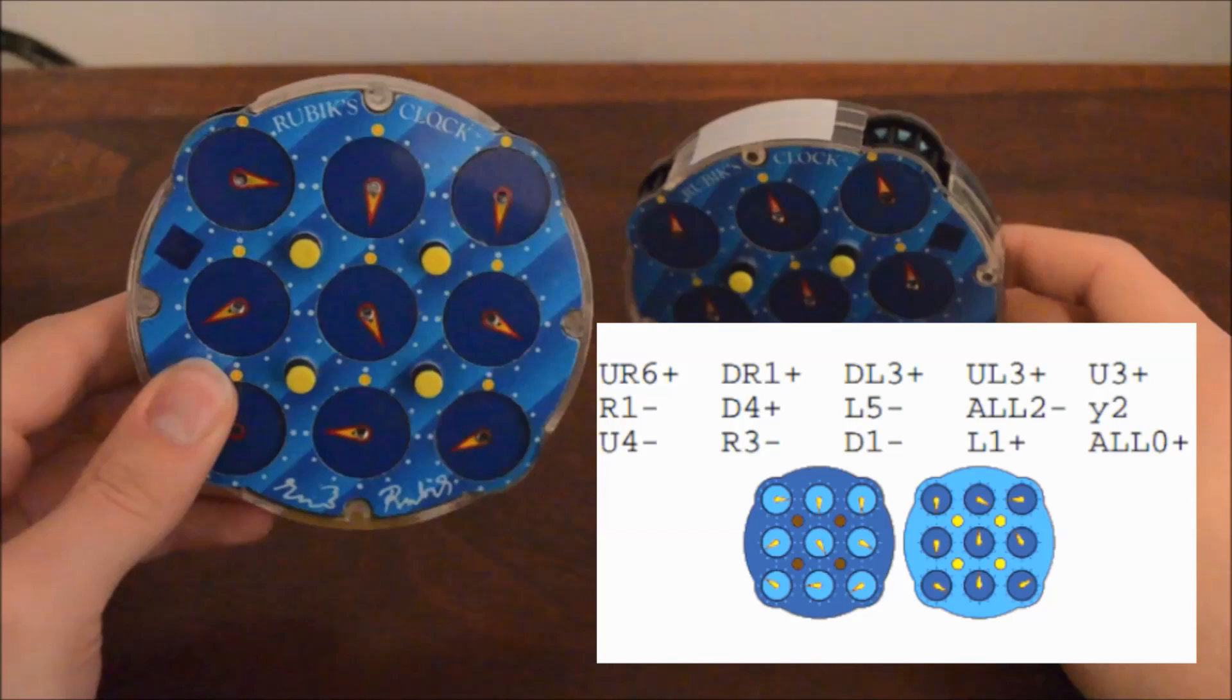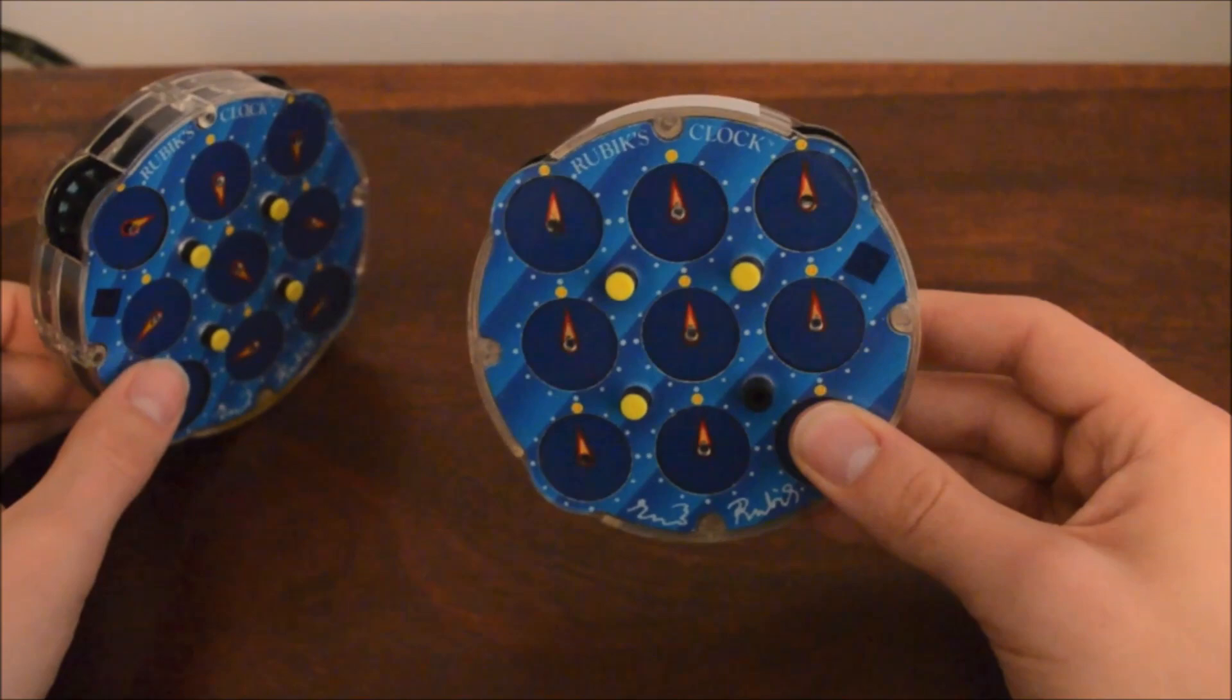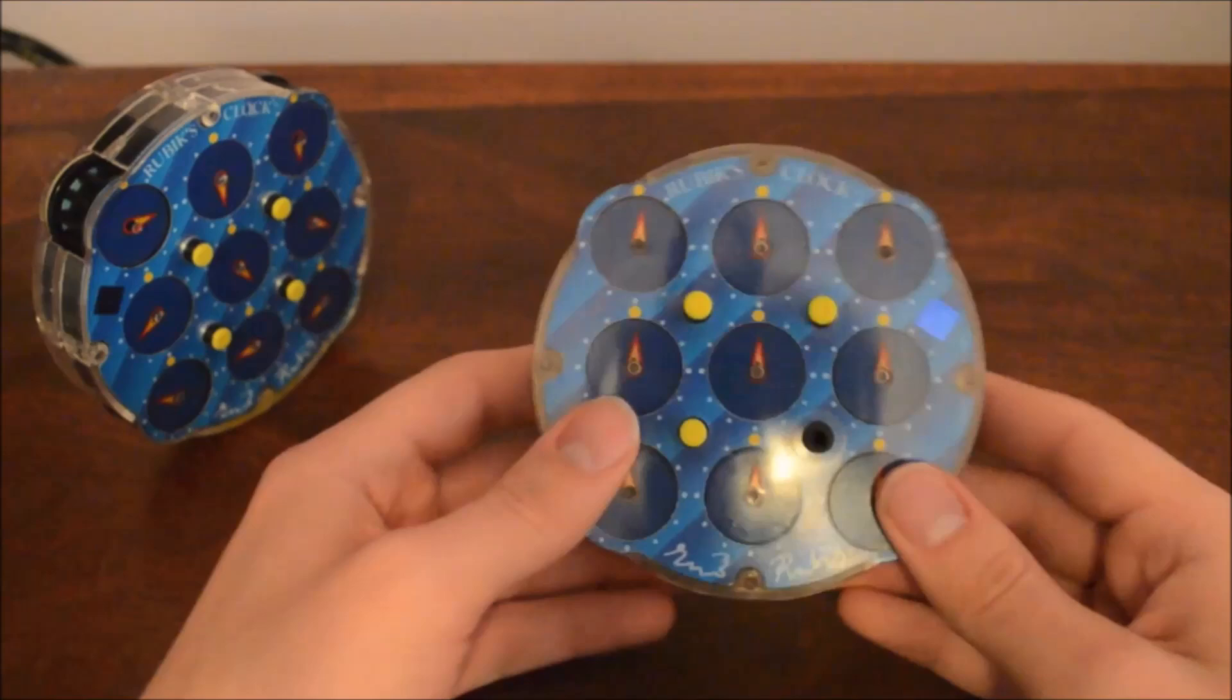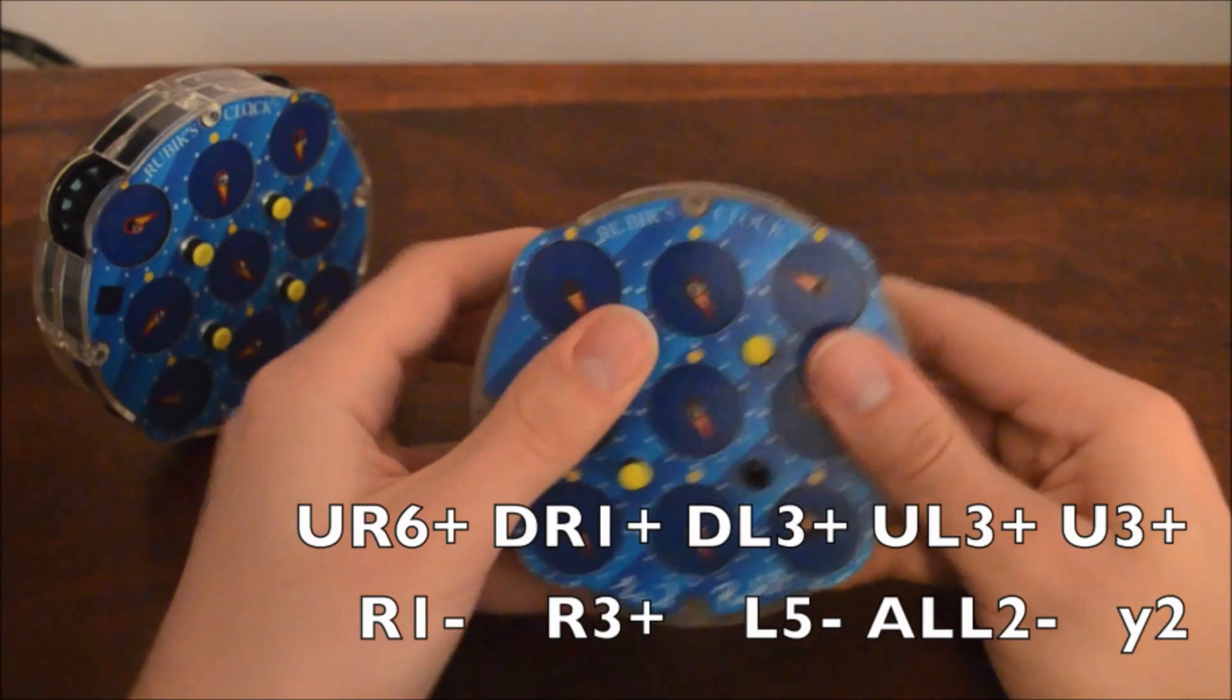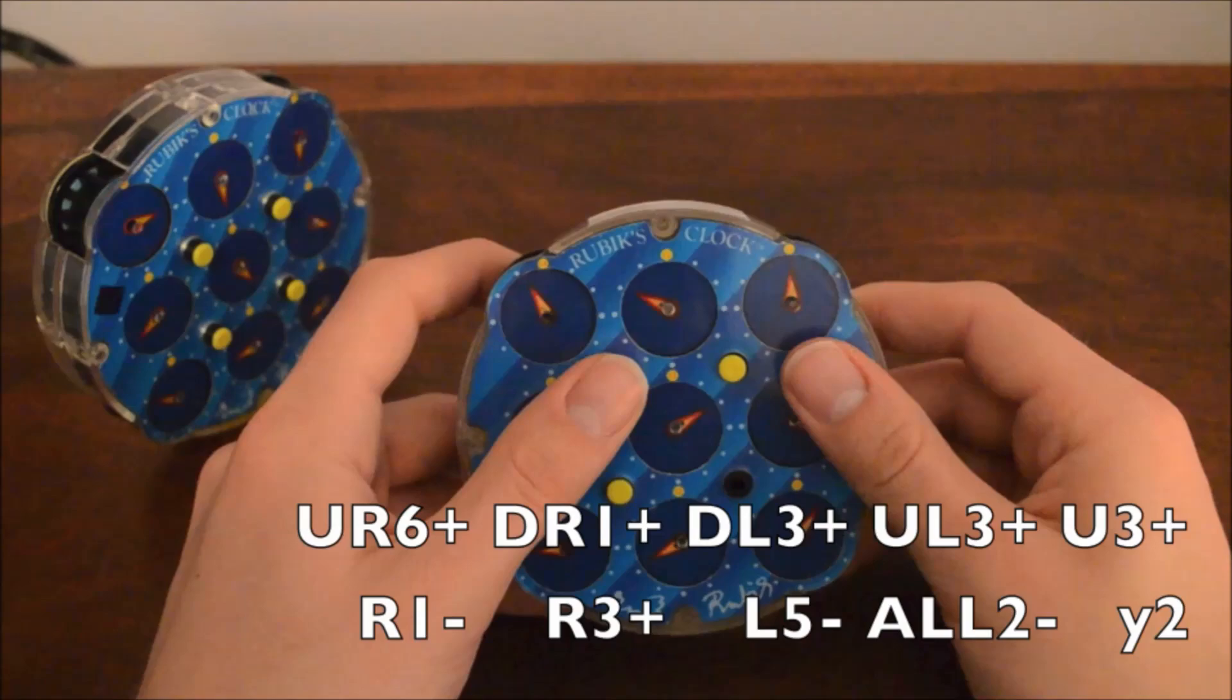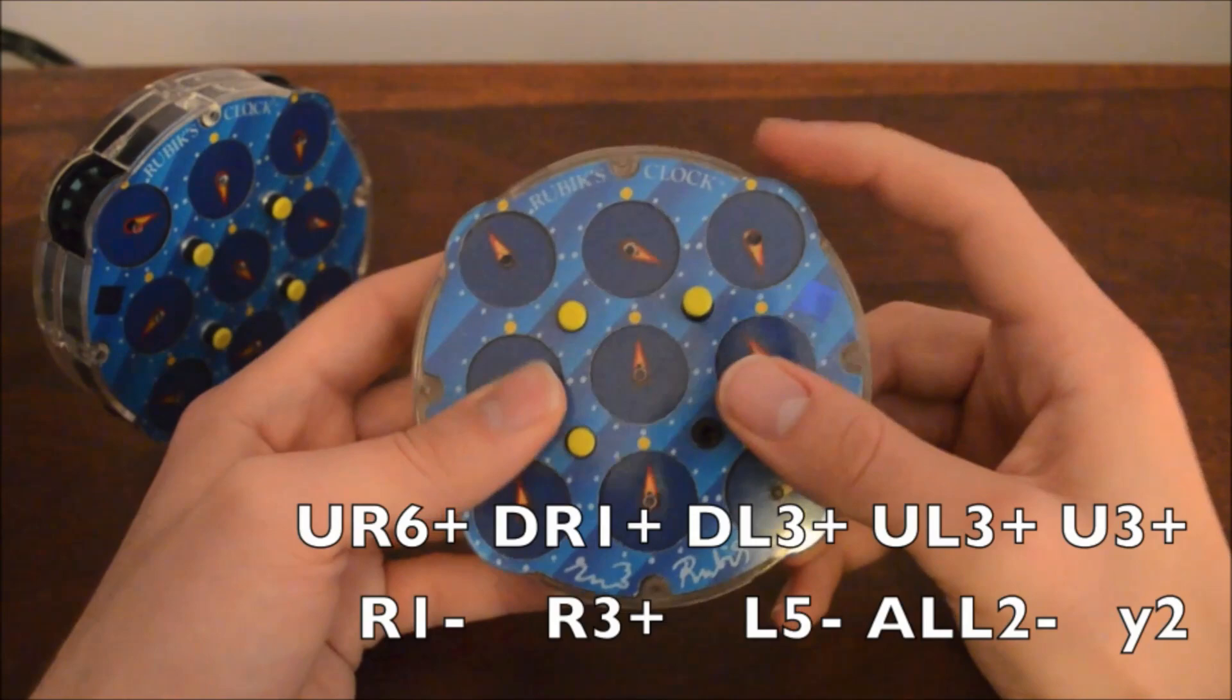What I've done here is this is the scramble showing on screen right now. And what I'm going to do is I'm going to do that scramble again, but do all the moves in a different order. And show that you get to the same result. Let's do all of the moves before the flip backwards. So start with all two minus and we're going to do everything else backwards. All two minus, L minus five, D plus four, R minus one, D plus three, UL three plus, and then DL one plus, DR one plus, and UR six plus.